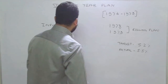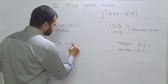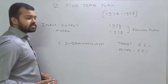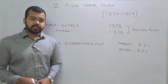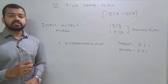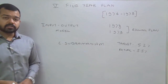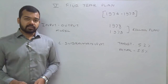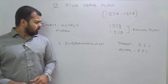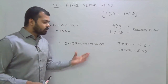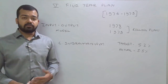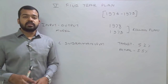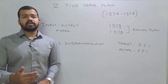The first draft of this Five Year Plan was proposed by C. Subramaniam. In that draft, he focused on growth with a direct attack on poverty. Deriving from the slogan given by Mrs. Indira Gandhi in 1971 — Garibi Hatao — policy makers focused on growth of the Indian economy and direct poverty alleviation programs.